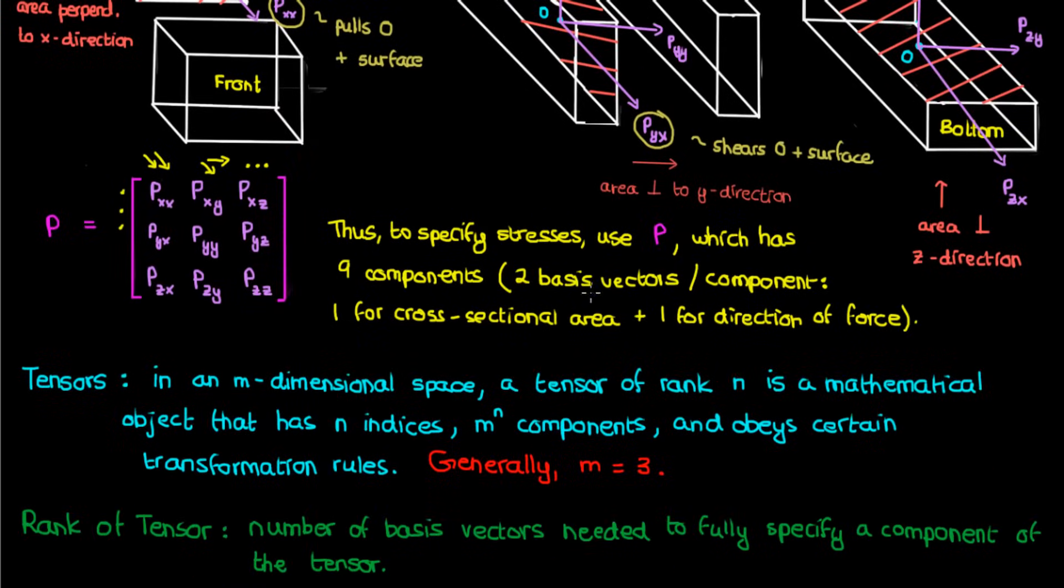And finally, what about our stresses on the beam? Well, I told you that in order to specify each of the nine stress components, you needed two basis vectors per component: one basis vector for the area, the other basis vector for the direction of the force. And this makes P a tensor of rank two, also known as a stress tensor.